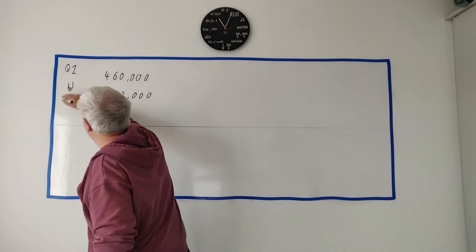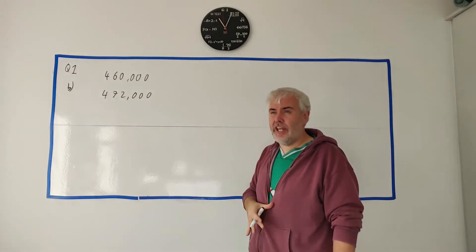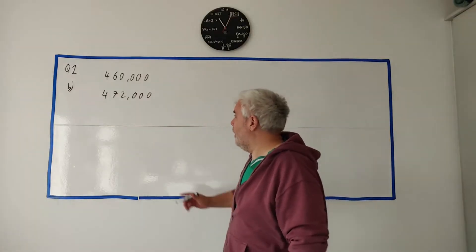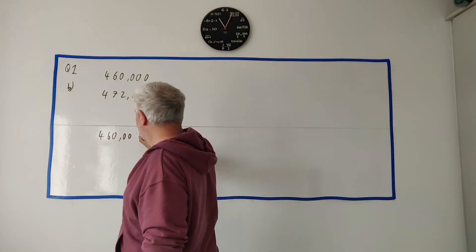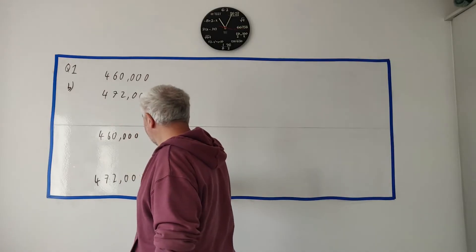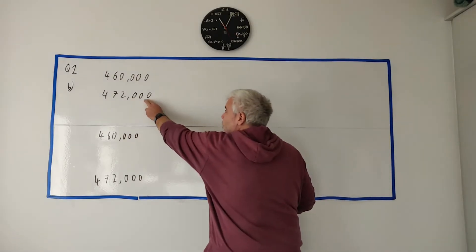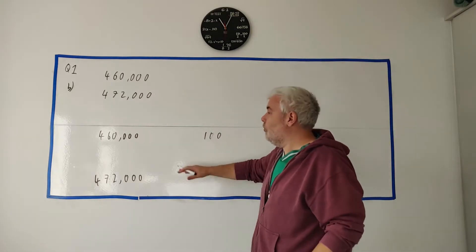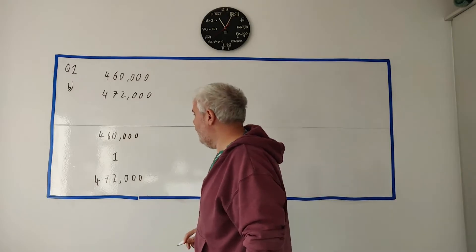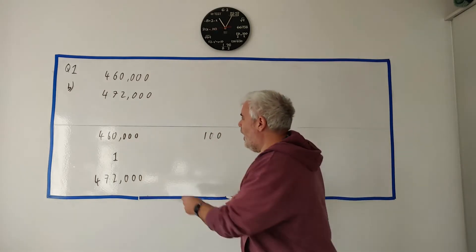On to part B. We have a different house here, 460,000, and it went up in value to 472,000. I'm going to do it this slow and steady way just to try and help you think about it. I start with 460,000 and I want to get to 472,000. This is 100% and I want to get to some number here. I get from this number to this number. I always do it the same way. I just go to 1.